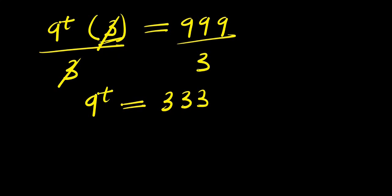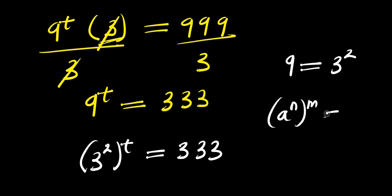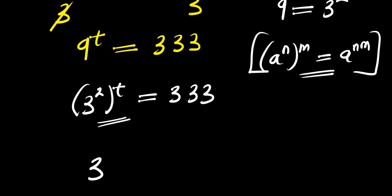From here, we express 9 as 3 to the power of 2, since 9 = 3 × 3. So we have (3²)^t = 333. Applying the identity (a^n)^m = a^(n×m), we get 3^(2t) = 333.